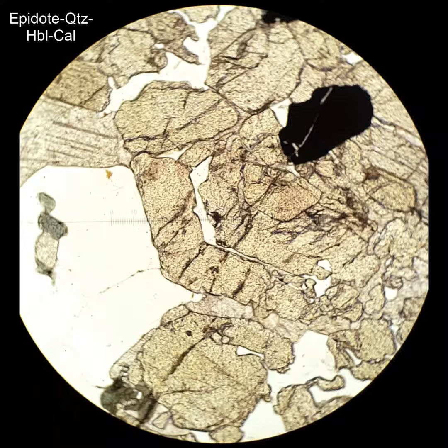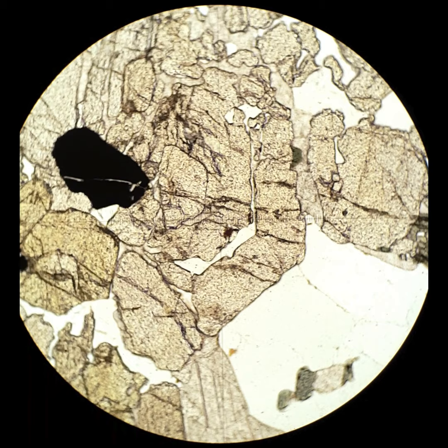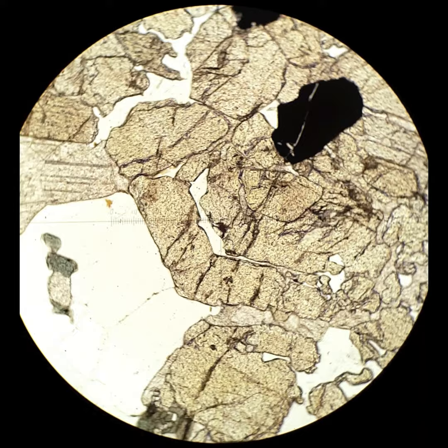Sometimes epidote is distinctly yellow, or sort of a yellowish green in thin section. That's what this epidote is. And again, when you cross the polars, you get this really interesting array of interference colors. It's super intense.